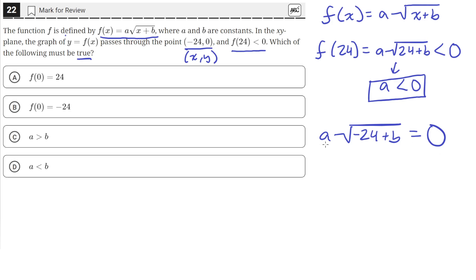We're told that a multiplied with this square root equals 0, which means one of these terms is 0. We know a cannot be 0 because a is strictly less than 0. This means √(-24+b) must equal 0.